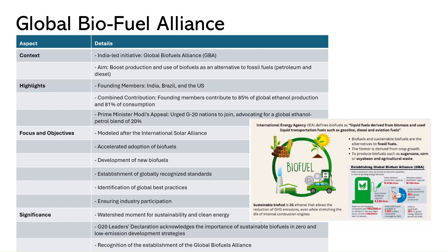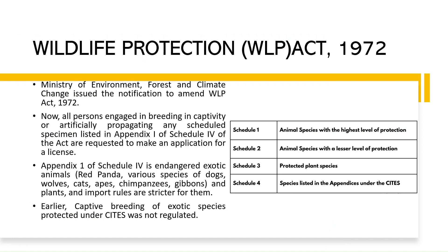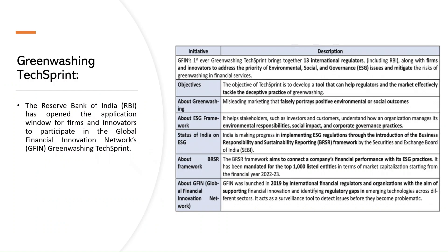Certain amendments have been made to the Wildlife Protection Act to incorporate species mentioned in CITES — the Convention on International Trade in Endangered Species. Schedule 1 and 2 contain protection at higher and lower levels respectively for animals, Schedule 3 is for banned species, and Schedule 4 is now specifically reserved for species mentioned in CITES.